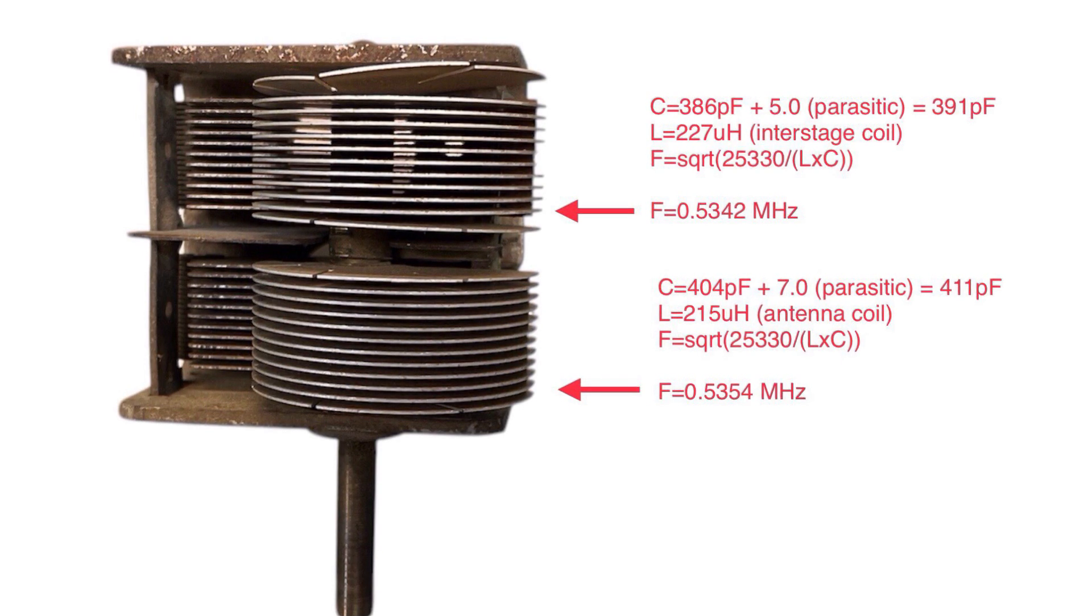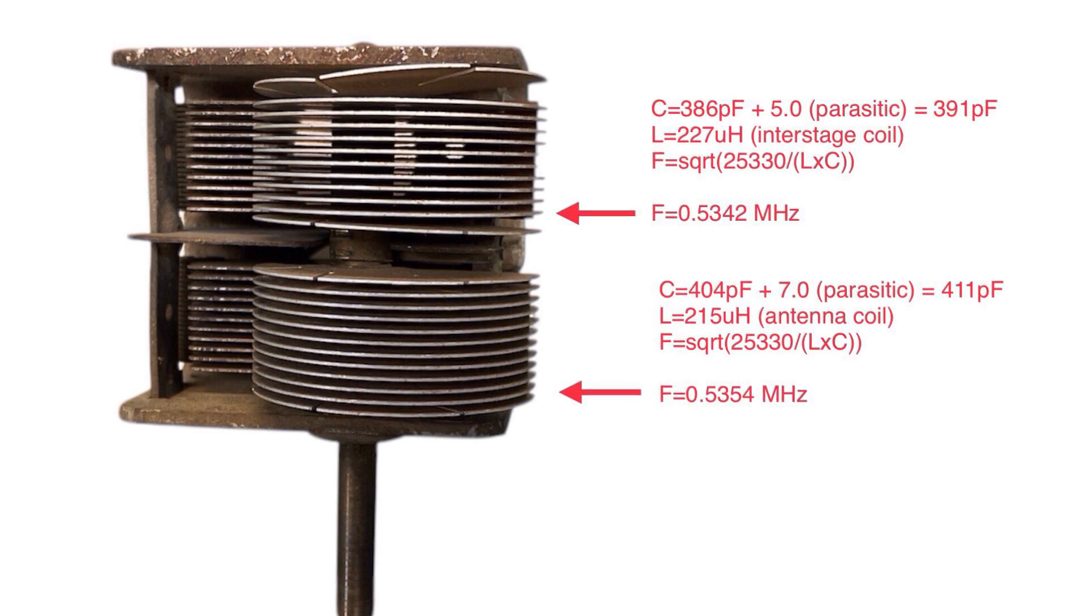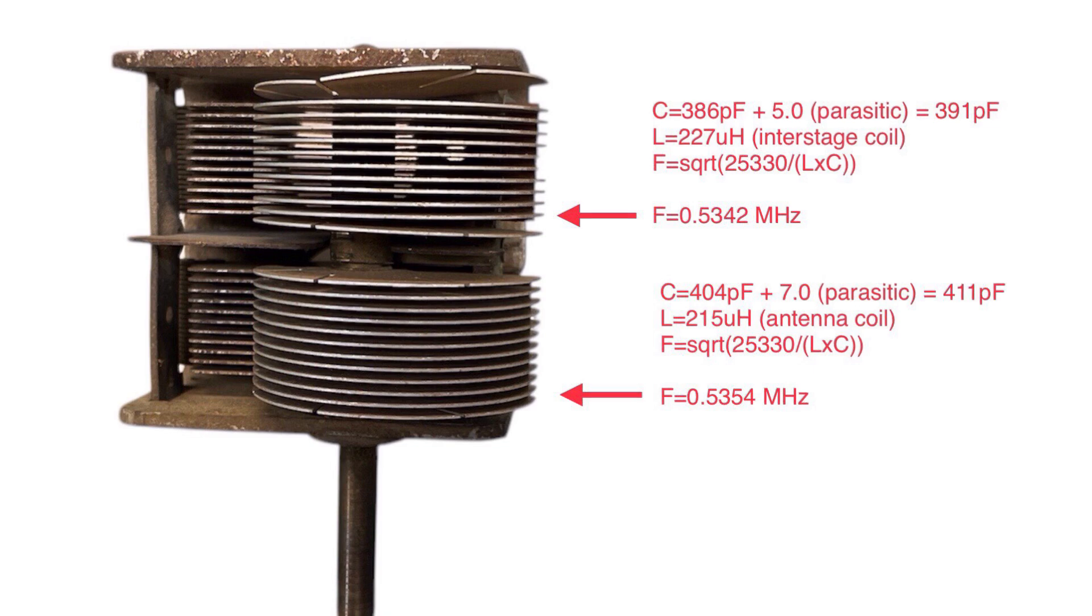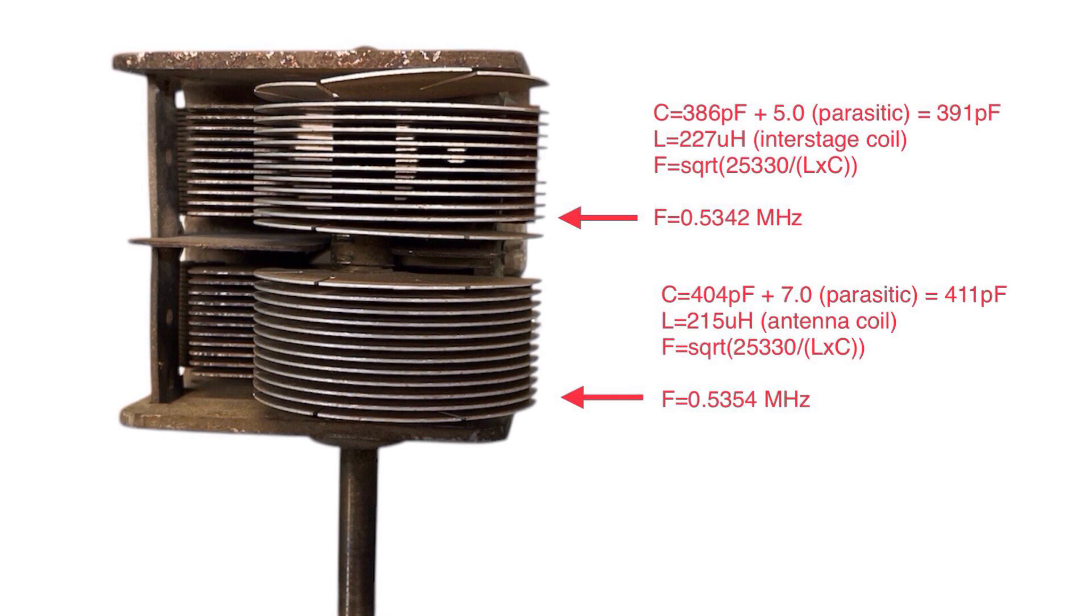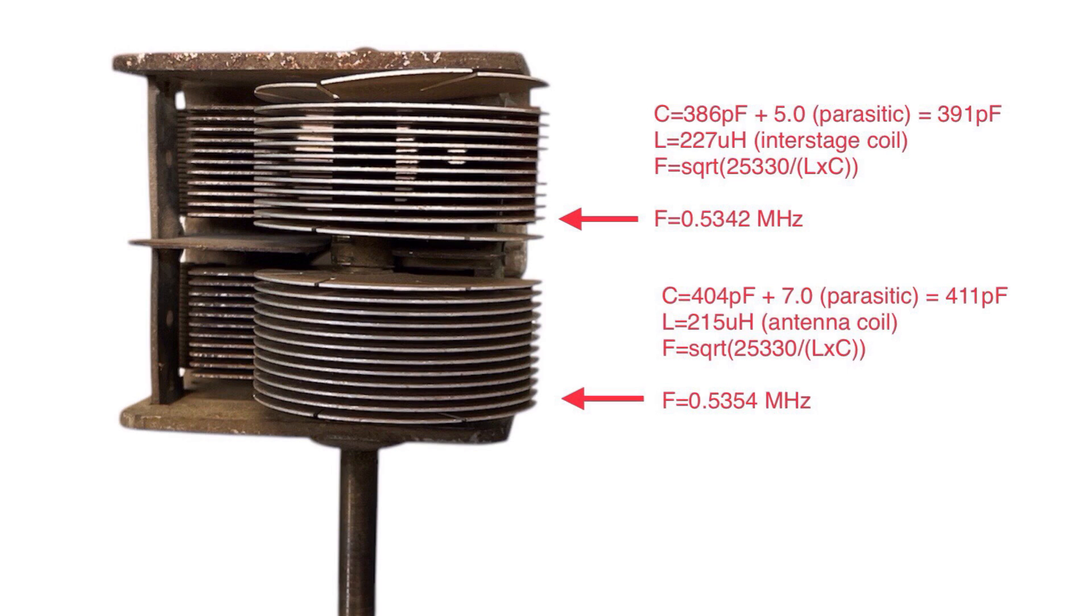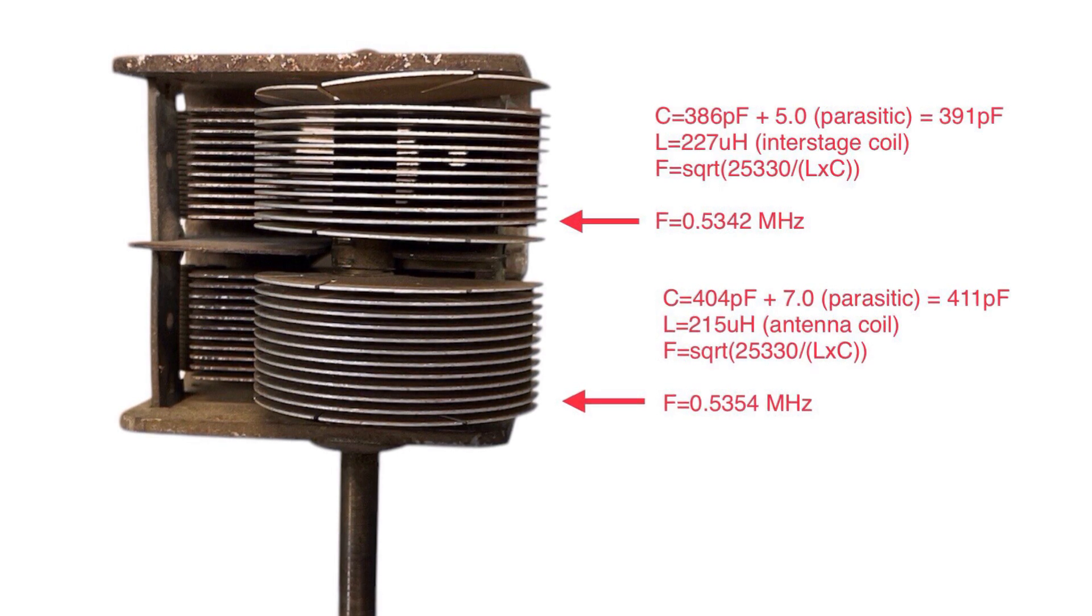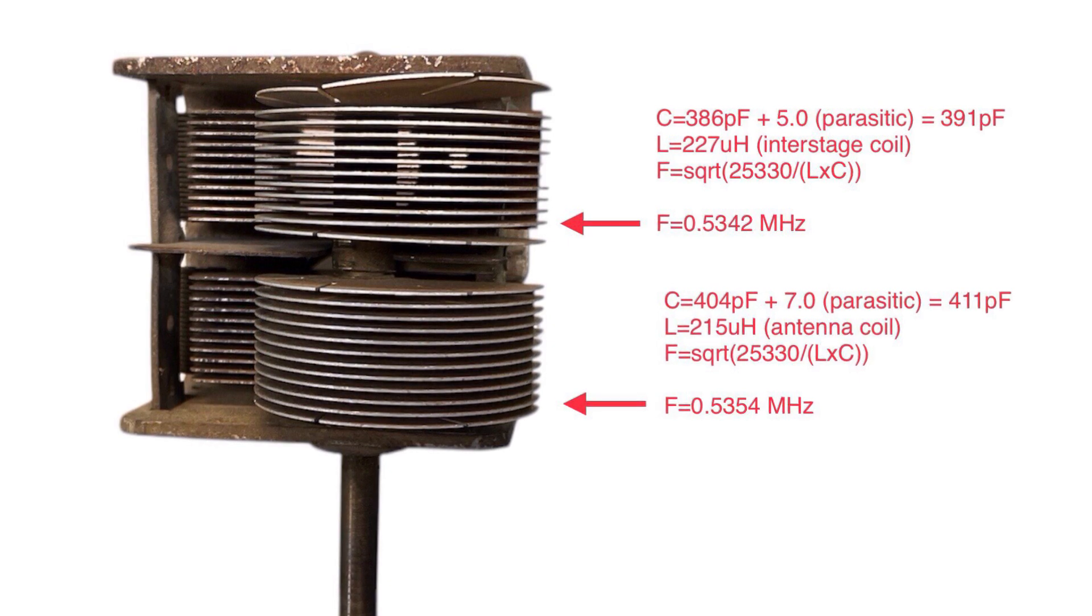You can see that it should have for alignment purposes. Just walking you through the math, you can see the measured capacitance of the rear section and the front section, represented by C, and the inductances of the antenna coil as well as that interstage coil. And that's where the differences are, 215 versus 227 microhenries.